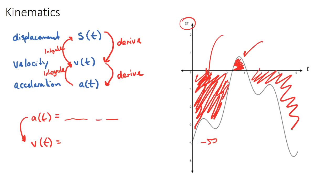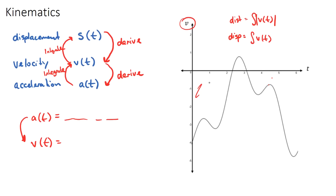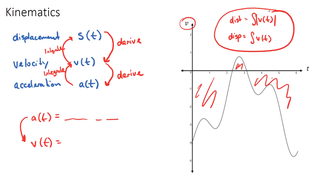The total distance traveled is the integral of the absolute value of velocity, written with absolute value signs around v(t). This makes all areas positive. This is different from displacement, which is just the integral of velocity — where negative areas cancel with positive ones to give a net value. So displacement gives the net distance from the starting point, while total distance traveled requires the absolute value integral.